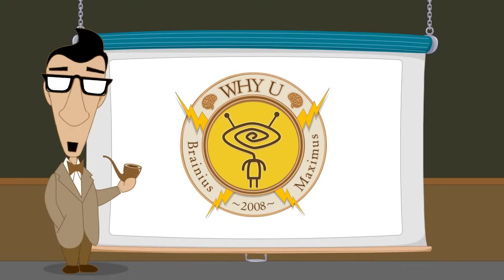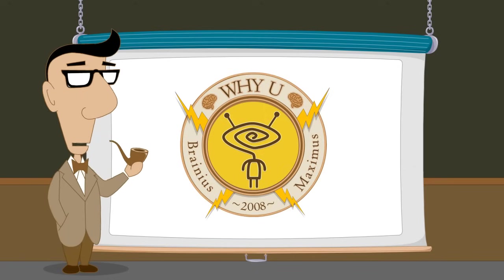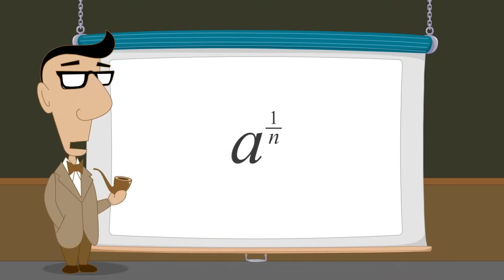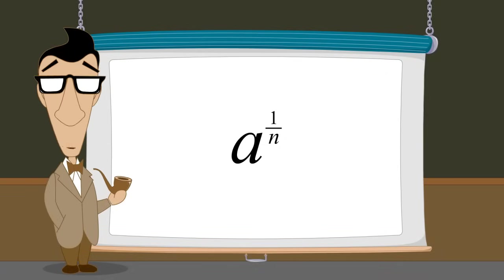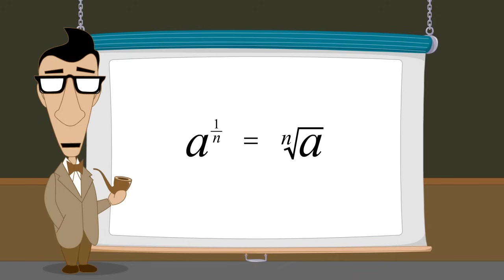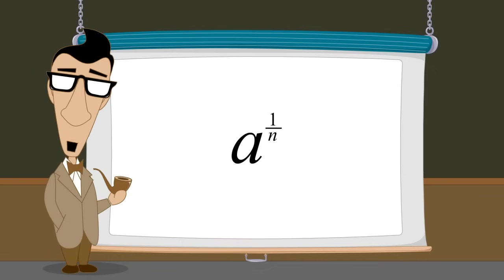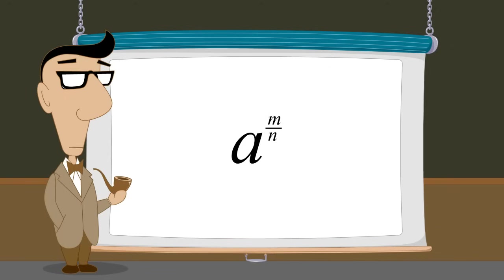Hello, I'm Professor Von Schmohawk, and welcome to Why U. In the previous lecture, we saw that any number with an exponent 1 over n represents the nth root of that number. In this lecture, we will show that exponents can also be fractions with numerators other than one. In fact, an exponent can be any positive or negative rational number.